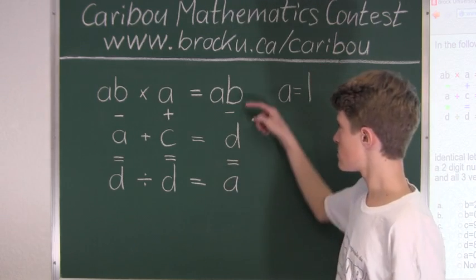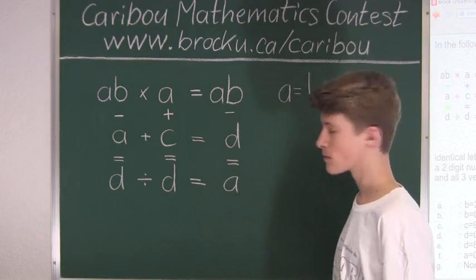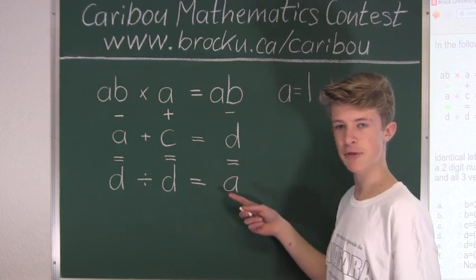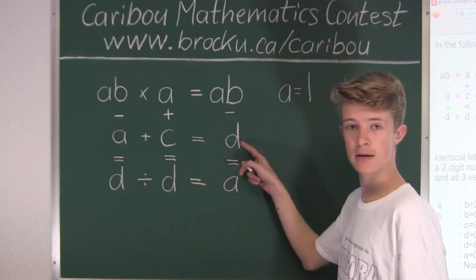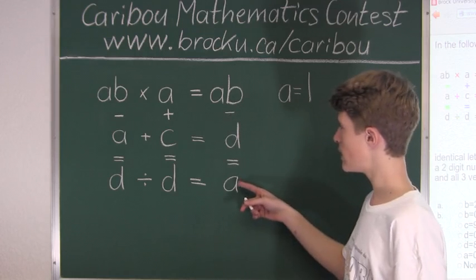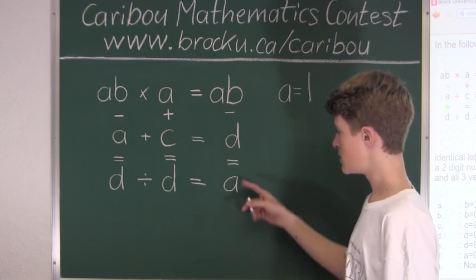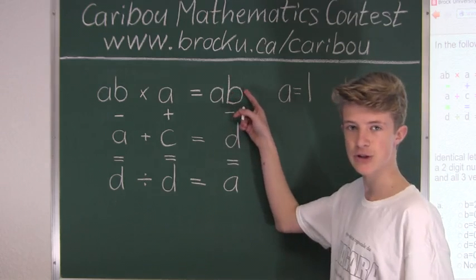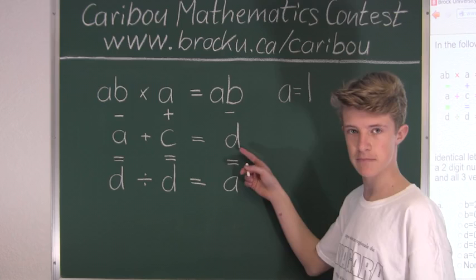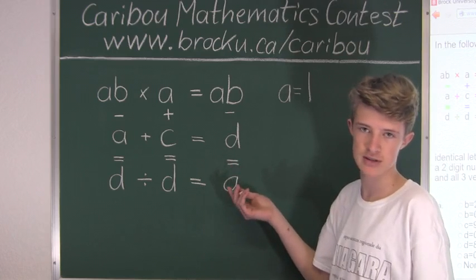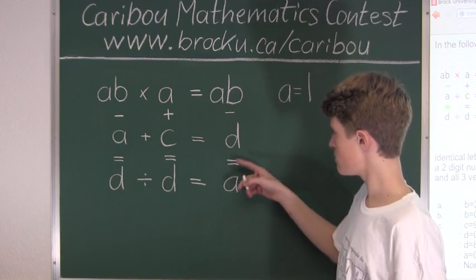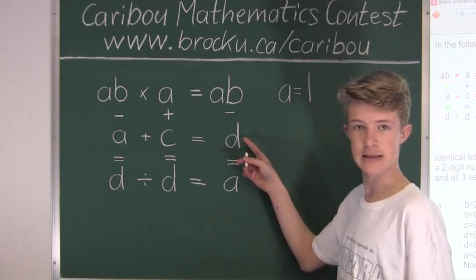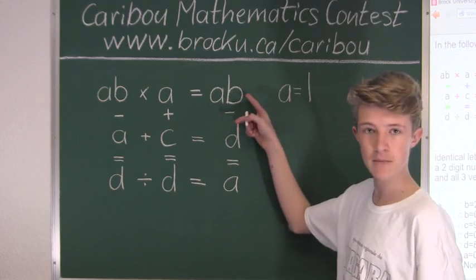Now let's look at another calculation: AB minus D equals A, which is the same as A plus D equals AB. We know A is 1, so we have 1 plus a one-digit number equaling a two-digit number. That one-digit number must be the biggest possible, which is 9. So 1 plus 9 equals 10 — meaning D is 9 and B is 0.